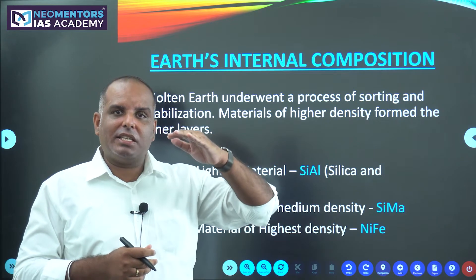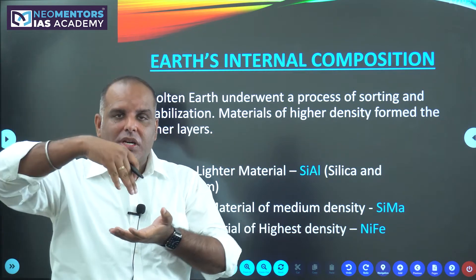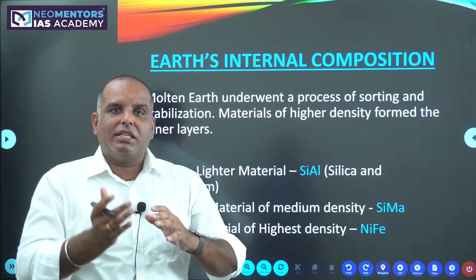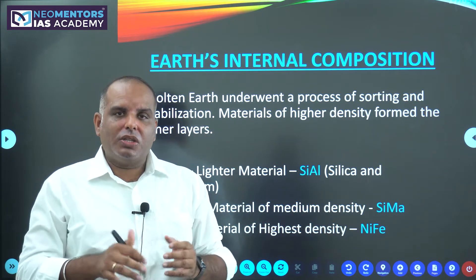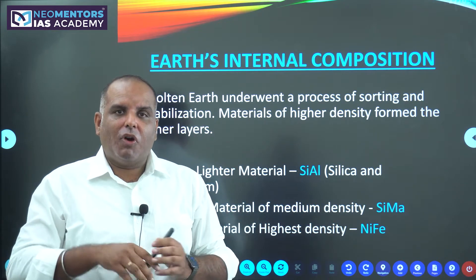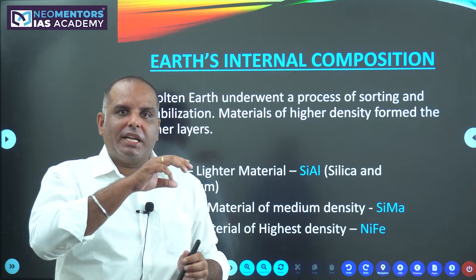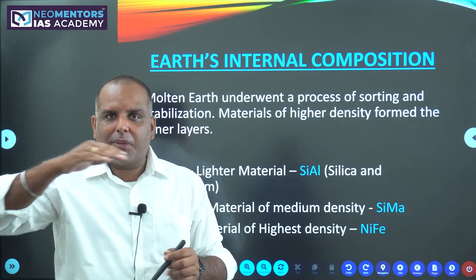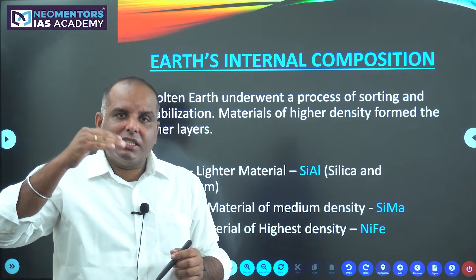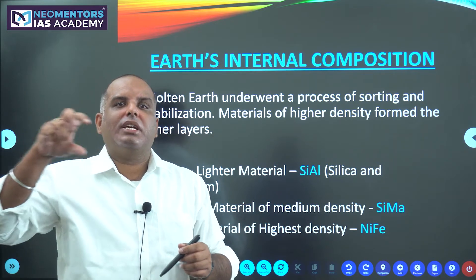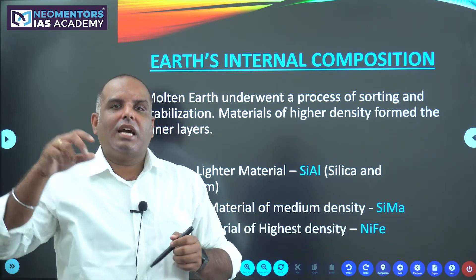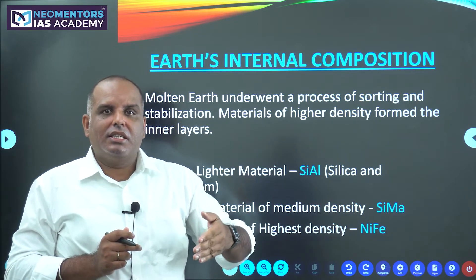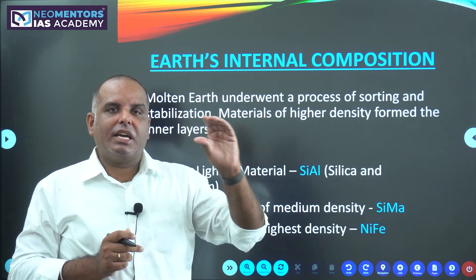The higher density material started moving down, and the lower density material started moving up. This is nothing but sorting. Materials of similar densities would be found at a particular depth. Materials of lighter density would be found at the topmost layers. That means we have different layers of varying densities. This is nothing but stratification — 'strata' means layers.